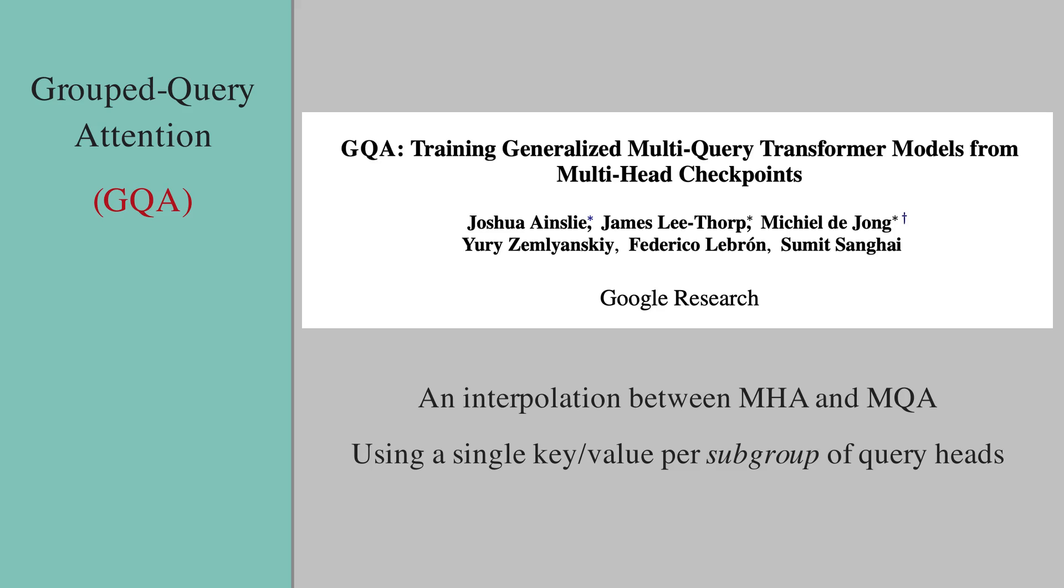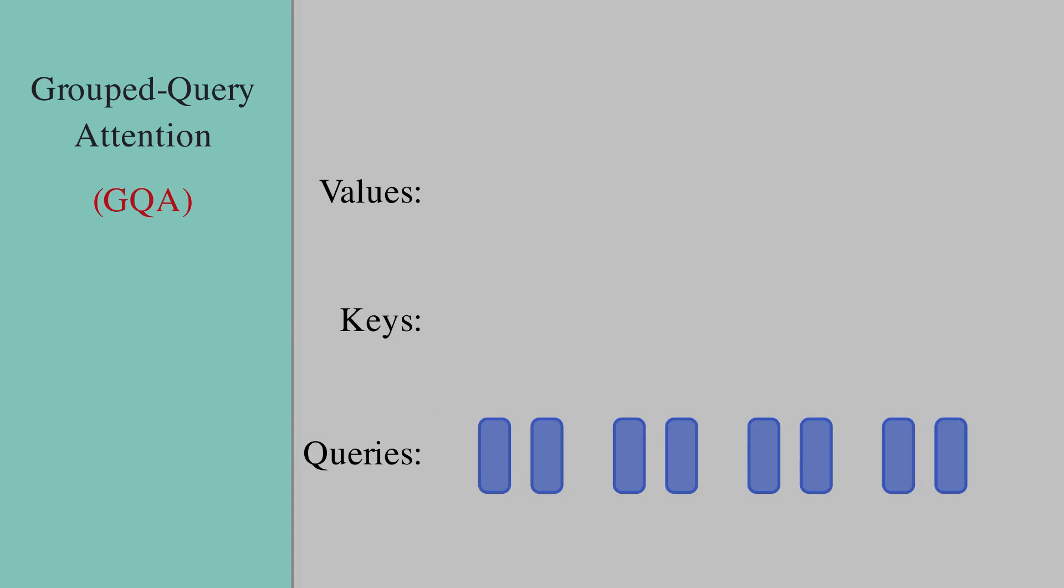Let's start with the queries. Assume we have h heads, and h is set to 8 for visualization purposes. Let's assume that we have four subgroups of these queries. That means in each subgroup we have two queries. For each subgroup we also get one key and one value.